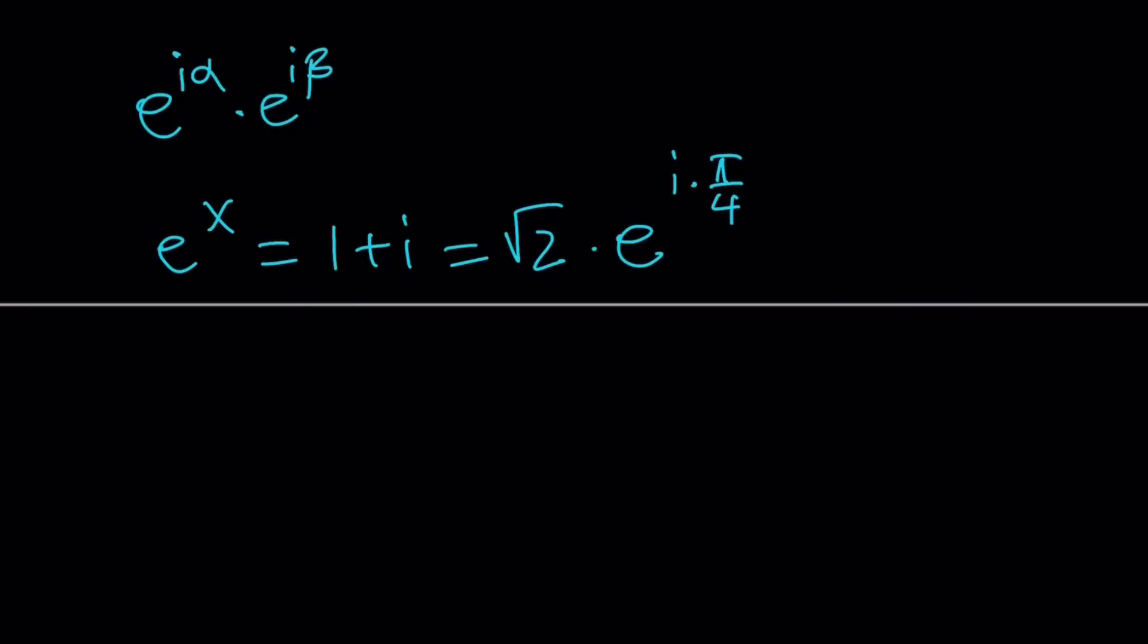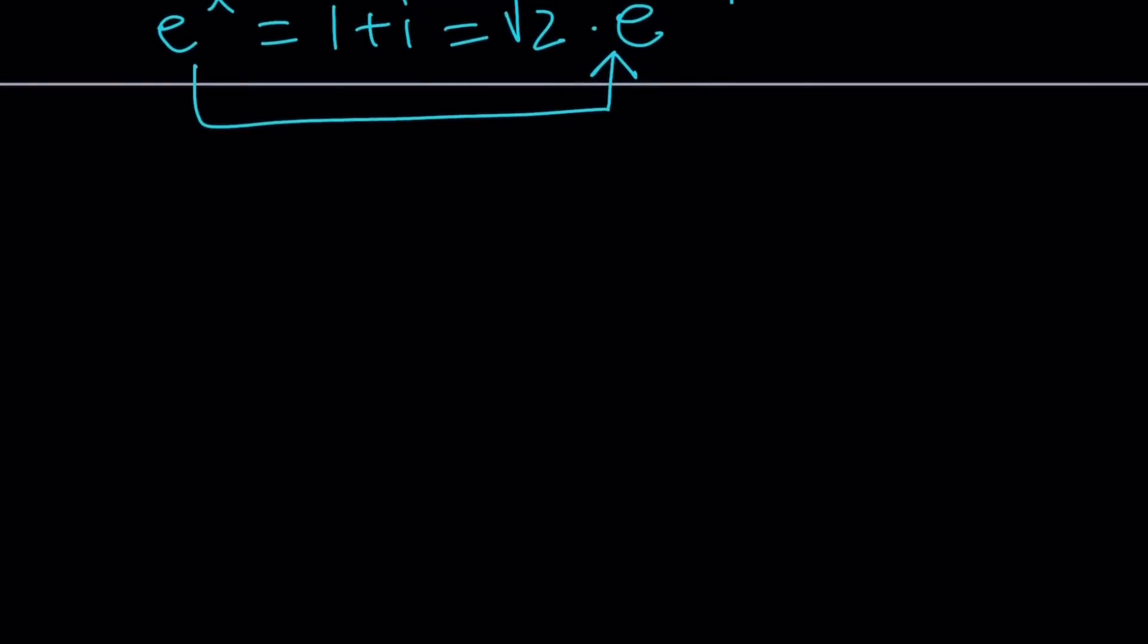Now we can forget about 1 plus i and equate these two things and try to find x from there. Let's do that next. We have e to the x equals square root of 2 times e to the power i times pi over 4.